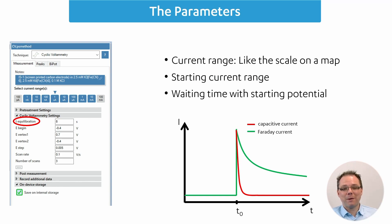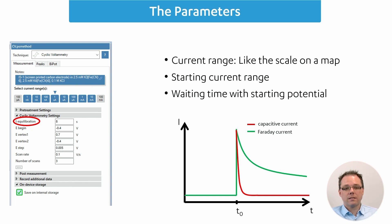The next parameter is T equilibration, which is a waiting time at the starting potential. We apply the E-begin — the starting potential — and do not record anything. One advantage is for autoranging: if you start a measurement and don't know if you've selected the best starting current range, you can set some T equilibration. Every half second, the potentiostat will switch the current range, giving it time to find the right one.